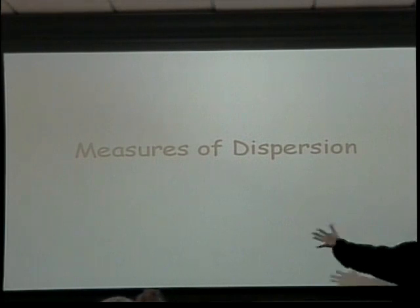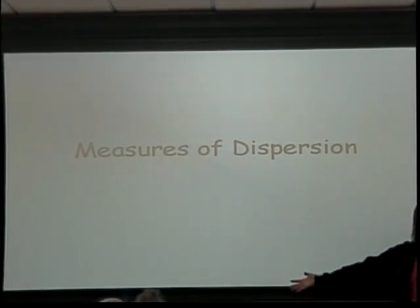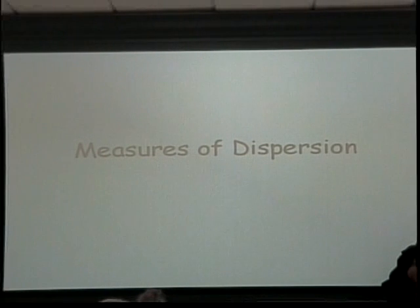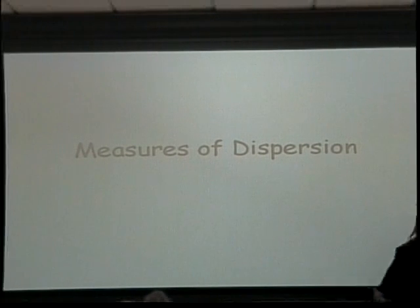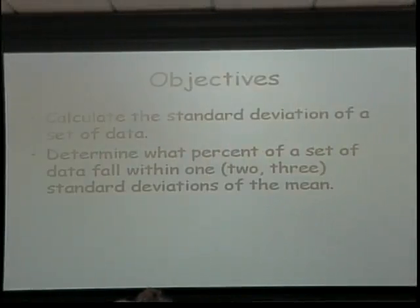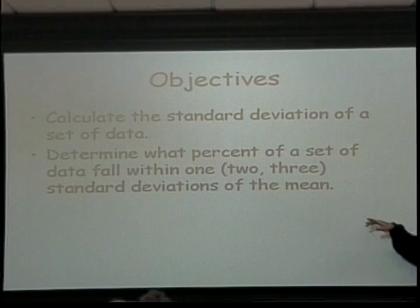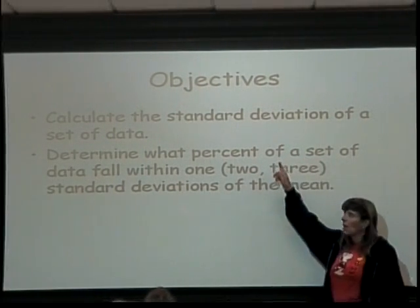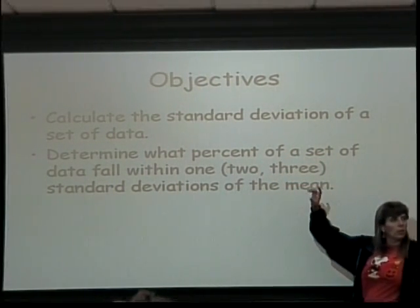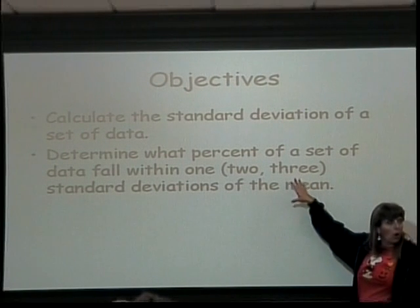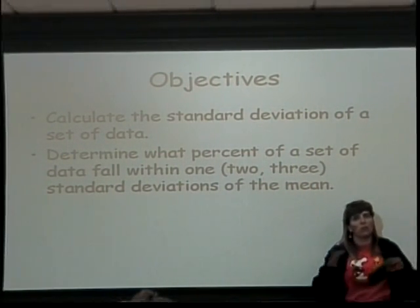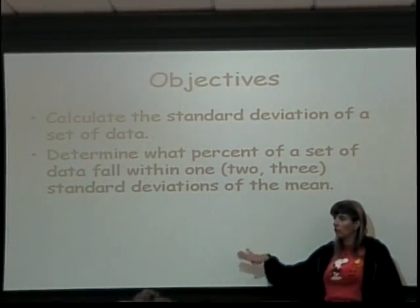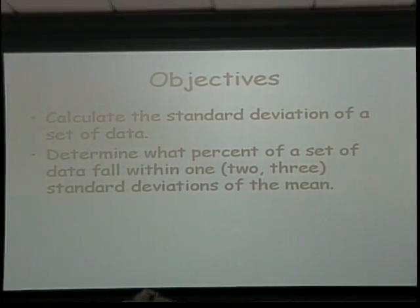This version talked about how spread out the data is from the mean. If it's really close, you'll have a small measure of this. If it's really far away, then you'll have a big one. We are going to only calculate one — it's called the standard deviation. What we're going to do is look at how much of our data falls within one standard deviation, or within two or three standard deviations of the mean. That's all we're going to do.